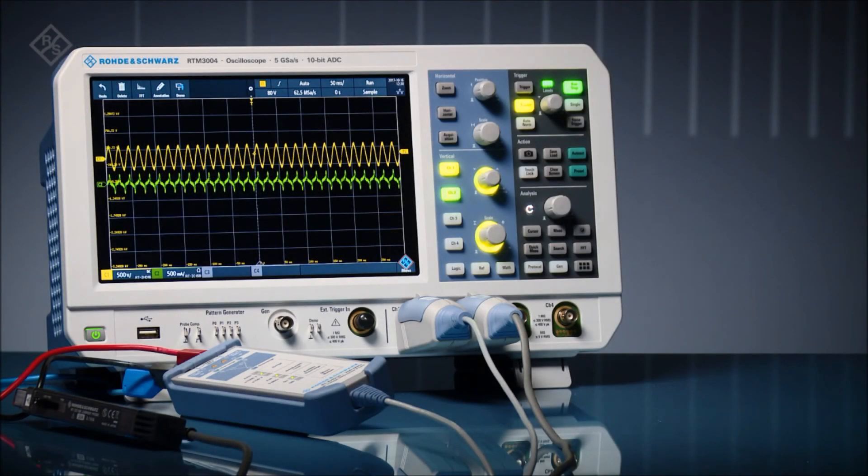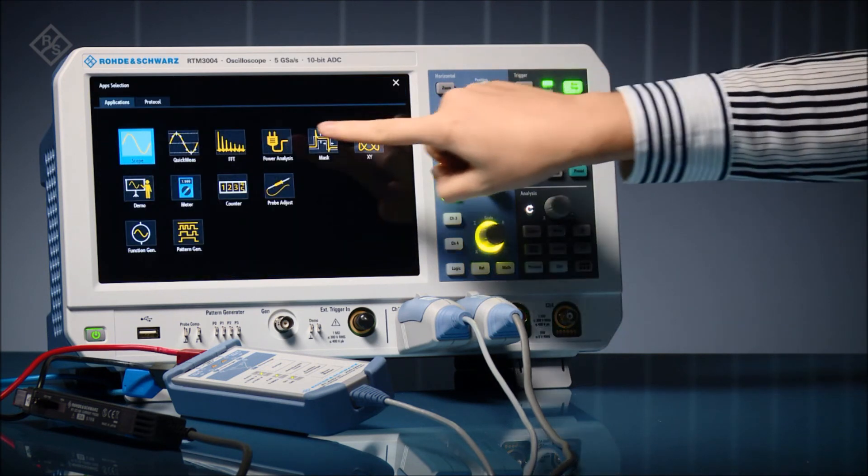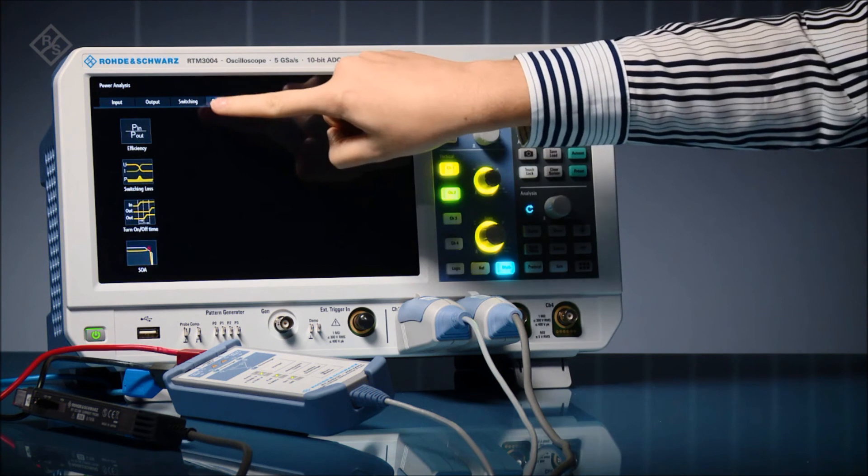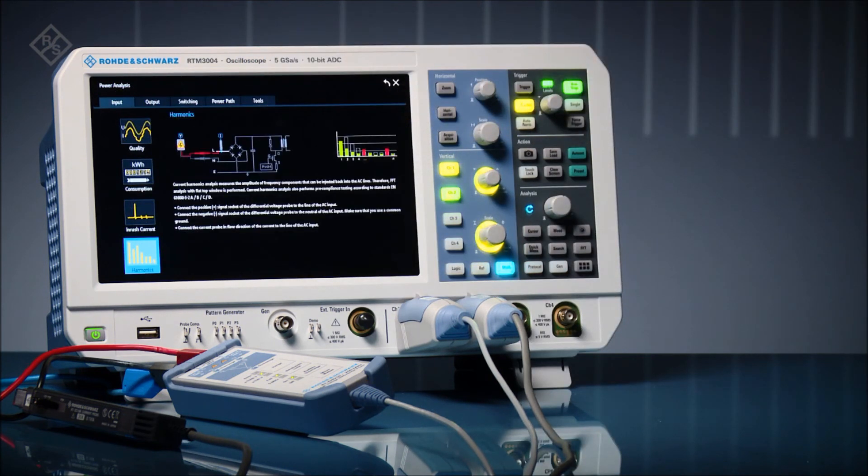The Rohde & Schwarz RTM 3000 and RTA 4000 series oscilloscopes offer a power analysis application. Open the application and choose from a broad set of power measurements. In this example, we'll determine pre-compliance for harmonics.